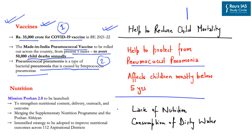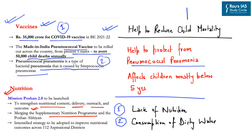Child mortality is also associated with lack of nutrition, consumption of dirty water, and poor sanitation. Regarding nutrition, the government aims to launch Mission Poshan 2, which will strengthen nutritional content, delivery, outreach and outcome. It will merge the Supplementary Nutrition Programme and Poshan Abhiyan, and aims to intensify strategy to improve nutritional outcomes across 112 aspirational districts.